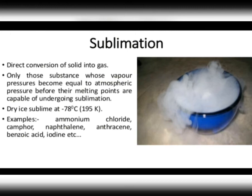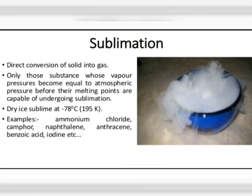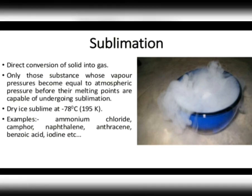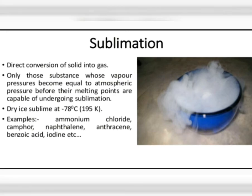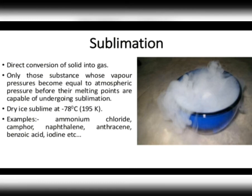Solid carbon dioxide, or dry ice, sublimes to form carbon dioxide gas. In many households, small naphthalene balls are kept stored with woolen and silk cloths to protect them from moths and other insects. It is noted that these naphthalene balls disappear with time without leaving behind any residue — because naphthalene balls undergo sublimation and keep on forming naphthalene vapor slowly, which disappears into the air.